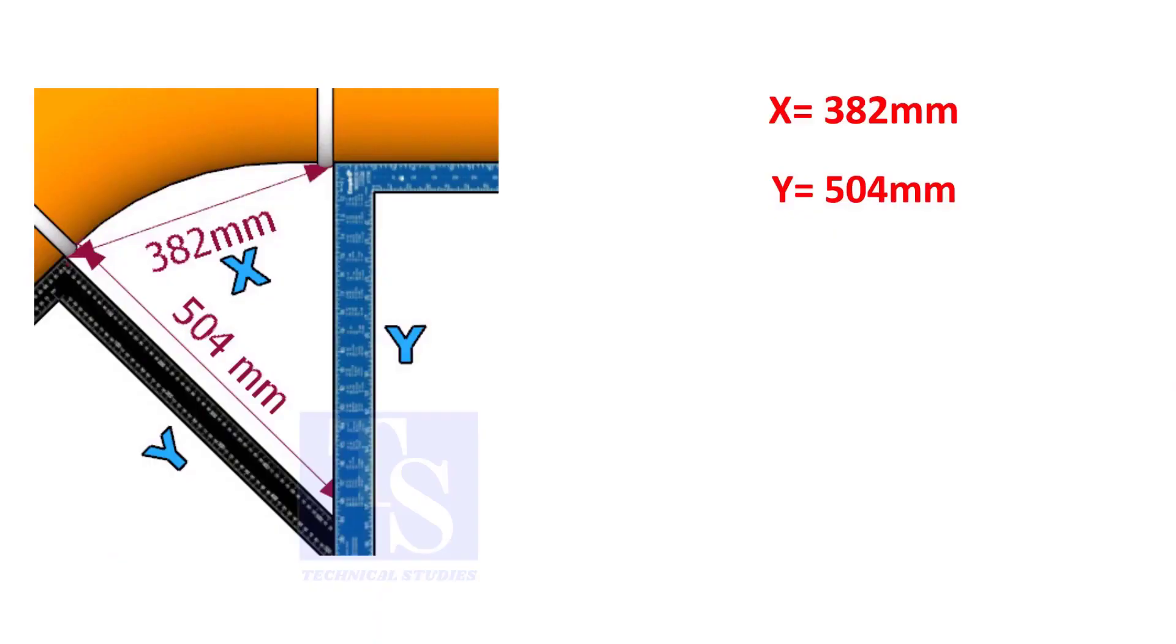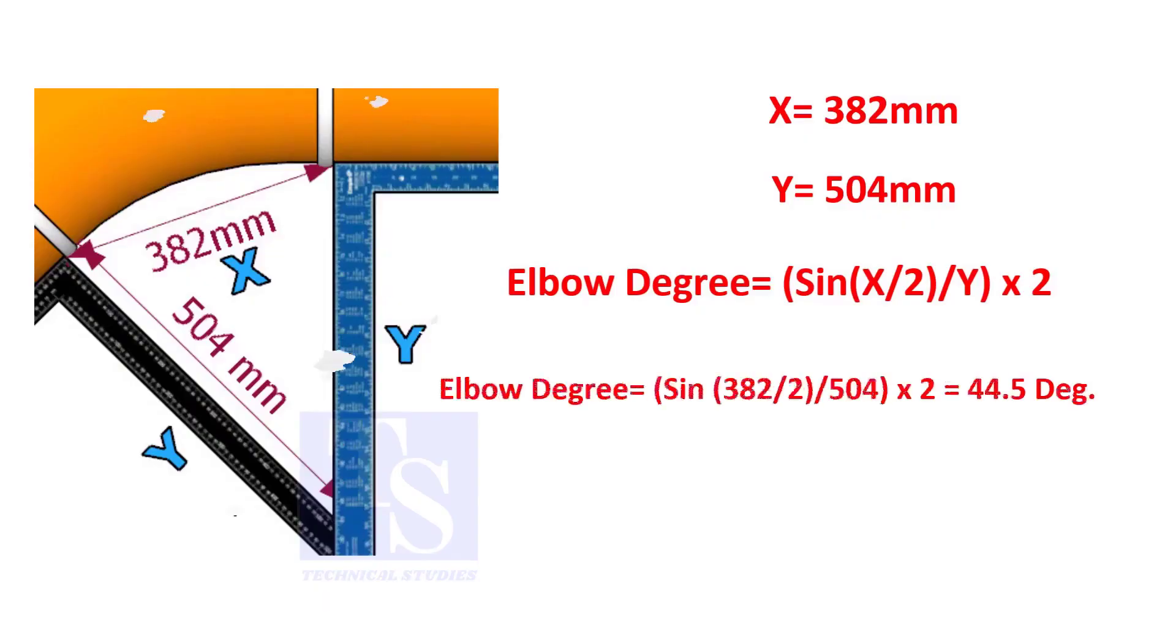Assume that the value of x is 382 and the value of y is 504. Divide the half value of 382 by 504 and convert the value to sine, then multiply by 2.